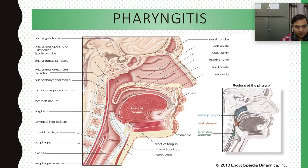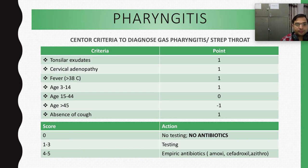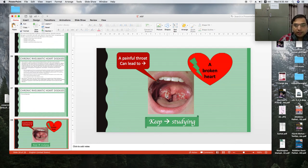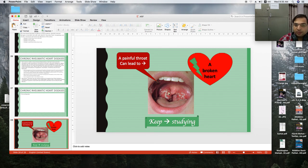Tonsillar exudates are creamish layers or creamish substance over the tonsils, which will be inflamed. You can see the tonsils are enlarged with a creamish layer over them, caused by Streptococcus bacteria. The only exception is mononucleosis — Epstein-Barr virus also causes some tonsillar exudates — but if tonsillar exudate like this is seen, we suggest it is a bacterial infection.